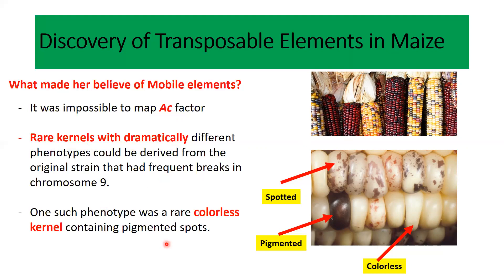Most importantly, they could observe colorless seeds alongside pigmented seeds. There are three different types of seeds on the maize cob: colorless seeds, pigmented seeds, and spotted seeds where pigment spots are present on a colorless background.